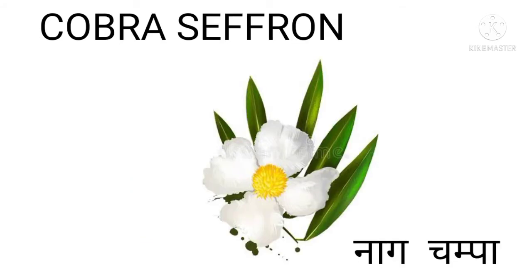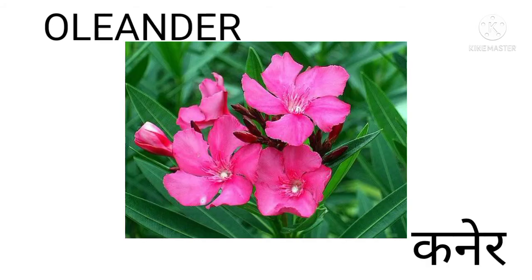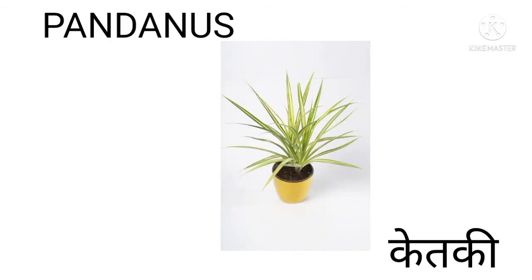Cobra Saffron — Cobra Saffron means Nag Champa. Oleander — Oleander means Kaner. Pandanus — Pandanus means Ketki.